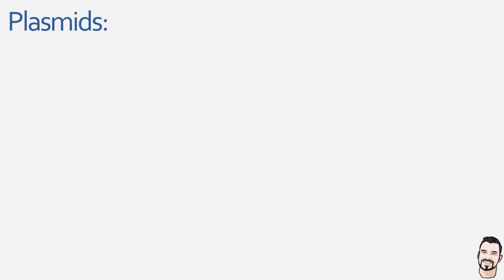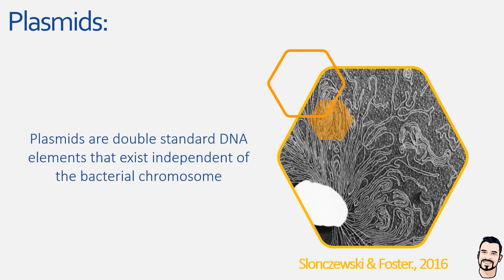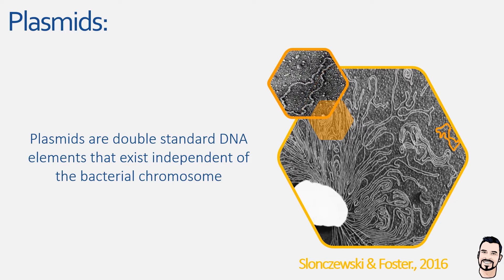Let's give this video a little context by recapping the basics of what a plasmid actually is. Within a cell, plasmids are observed as small pieces of double-stranded DNA that exist independently of the bacterial chromosome. Looking at an image from Microbiology: An Evolving Science, we can see chromosomal DNA leaking out of a bacterial cell, with a single highlighted loop of double-stranded DNA representing a bacterial plasmid — illustrating the massive size difference between the two. Plasmids are classed as extra-genomic elements because they do not form part of the bacterial chromosome but do form part of the bacterial genome.